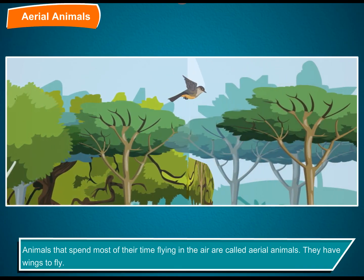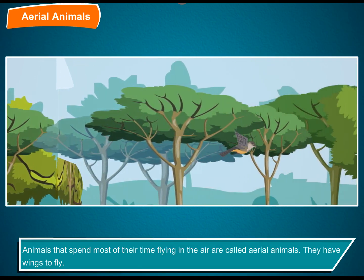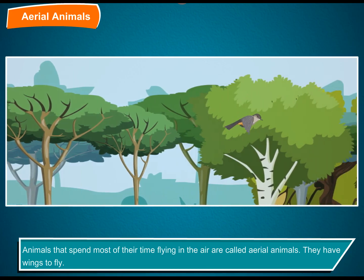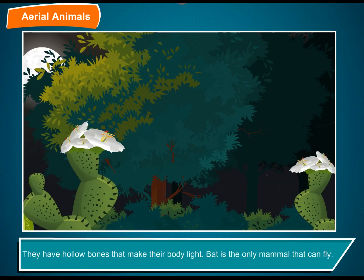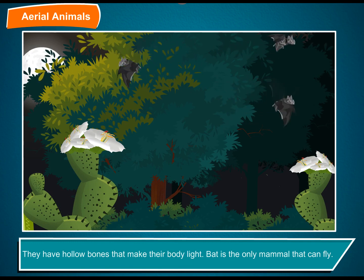Aerial animals — animals that spend most of their time flying in the air are called aerial animals. They have wings to fly and hollow bones that make their body light. The bat is the only mammal that can fly.